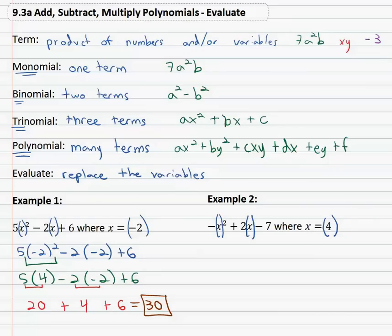Notice as we do this the negative is not part of the replacement, that's the opposite of x² or the opposite of 4 squared. Only the 4 is in parenthesis plus 2 times x which is 4 minus 7.